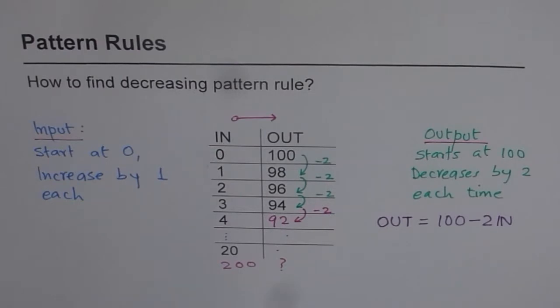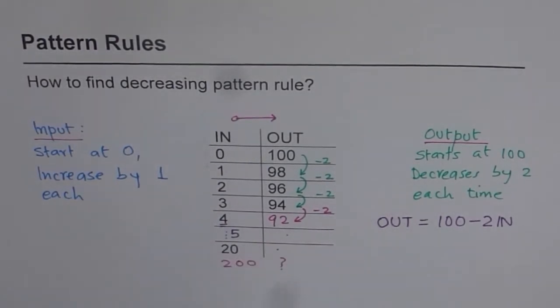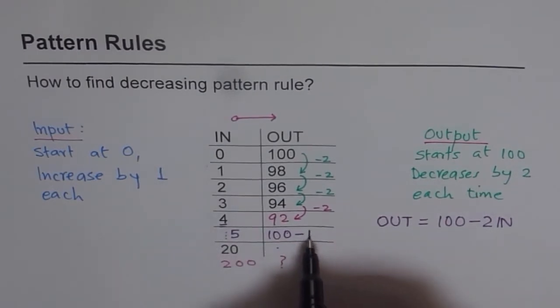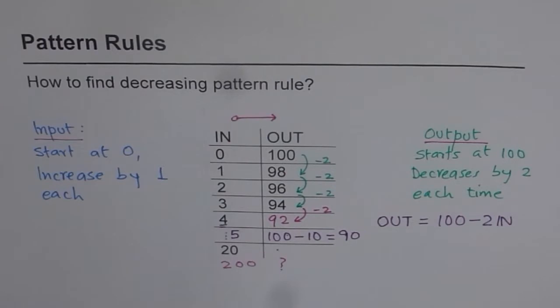Will it work every time? Let me check for number 4 itself. Let me check. So, let me write for 5. For 5, it should be 100 minus 2 times 5. 2 times 5 is 10. So, I should get 90. Does it work? 92 minus 2 is 90. It works.